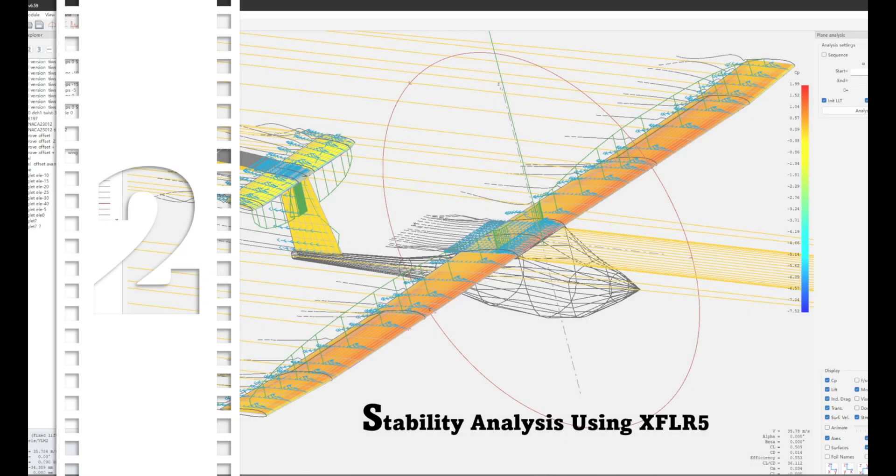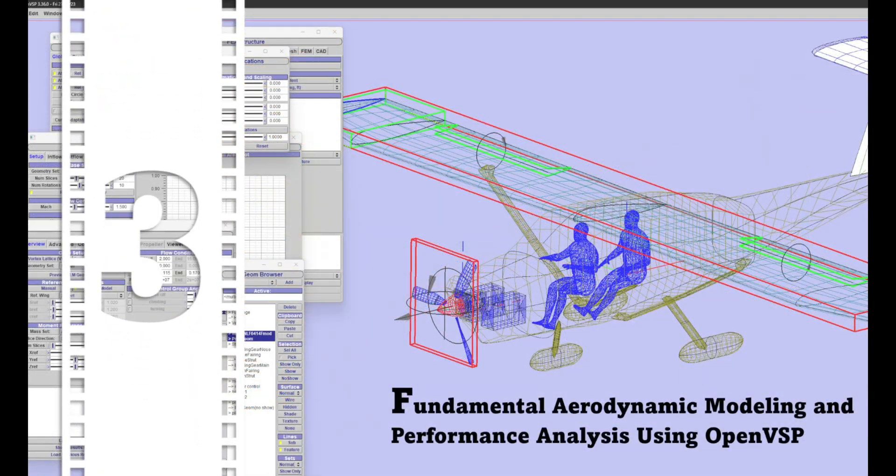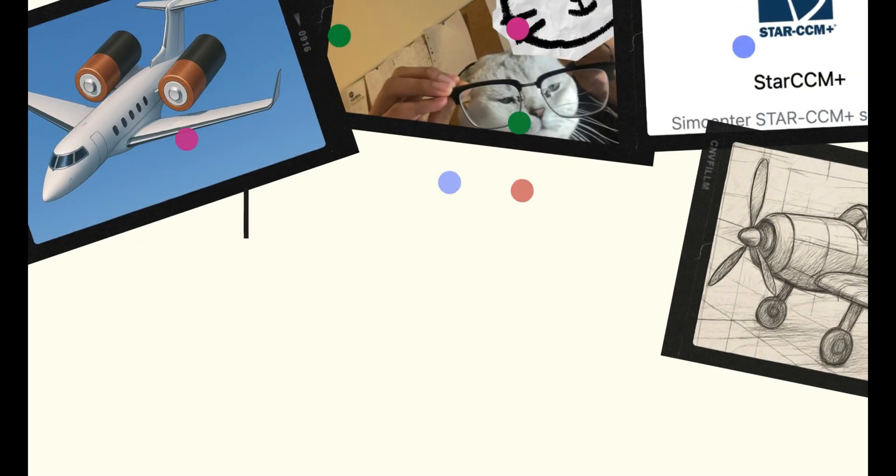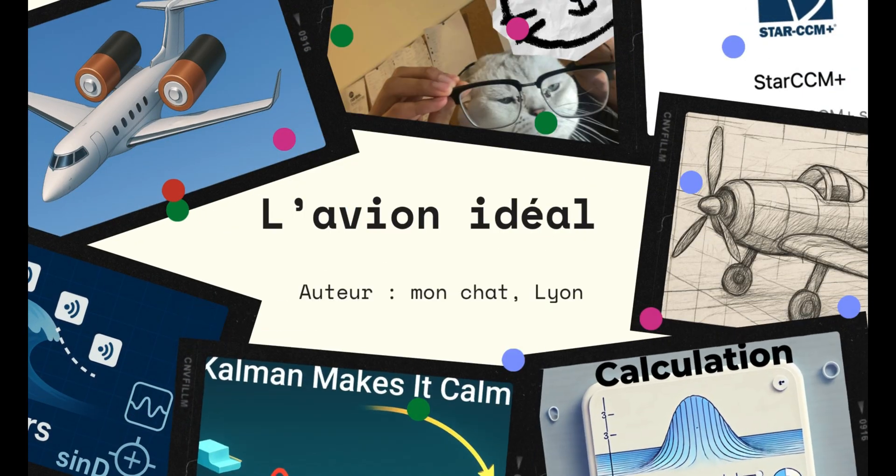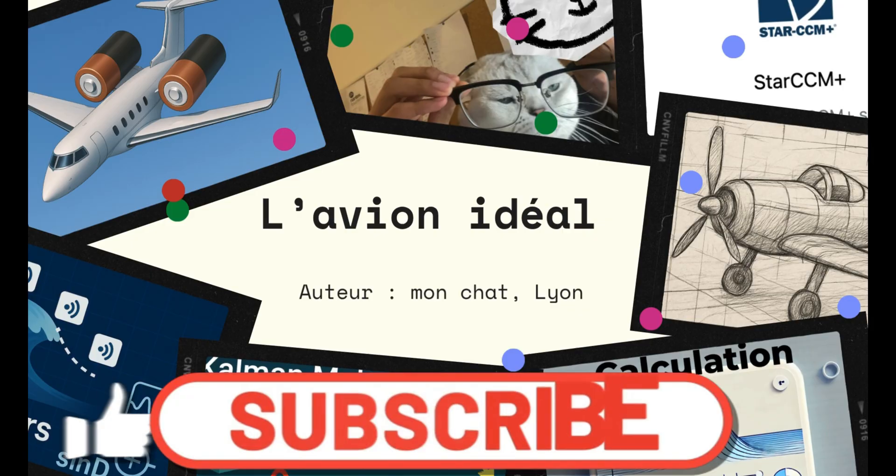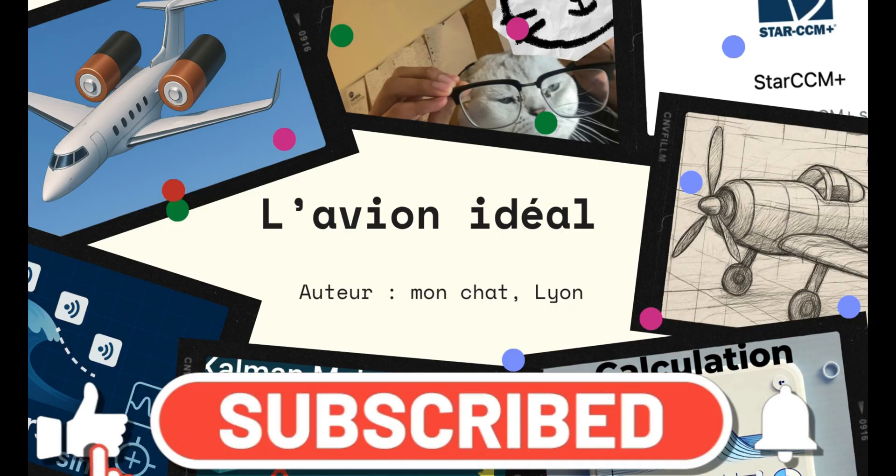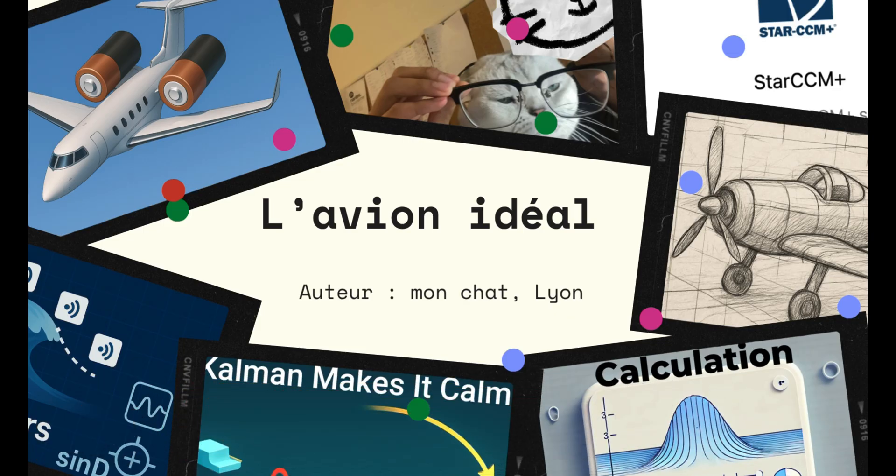After the stability analysis, we'll move on to dynamic calculations for the aircraft in various flight attitudes, in order to determine and optimize the propulsion system. Thank you again for watching. If you're interested in the Lavion Ideal channel, or if you'd like to follow Lyon's meticulous guidance, then don't hesitate. Subscribe to my channel.